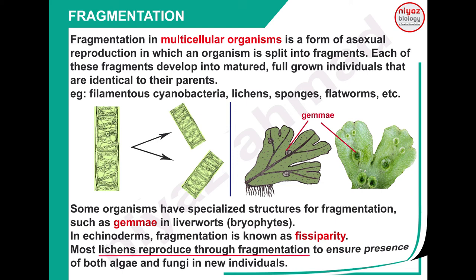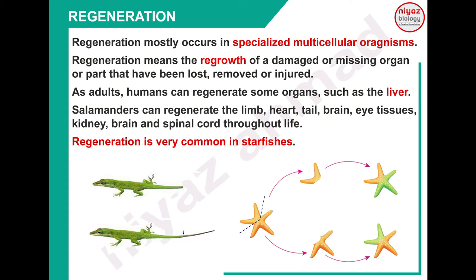Next topic is regeneration - یہ fragmentation کا تھوڑا سا modified version ہے۔ Fragmentation multicellular organism میں ہوتا ہے جبکہ regeneration specialized multicellular organisms میں ہوتا ہے۔ Regeneration کا مطلب ہے کہ جو کوئی damaged part ہے یا missing organ ہے جو injury سے ٹوٹ گیا یا remove ہو گیا - اس کا regrowth، اس کا پھر سے develop ہونا - یہ regeneration ہے۔ Human body میں normal example: liver کا - اگر liver کا 30-40% کسی کو donate کر دیں تو باقی 60% پھر سے regenerate کر لے گا۔ یہ property ہماری body میں صرف liver کے پاس ہے۔